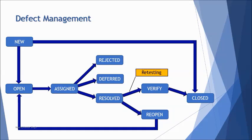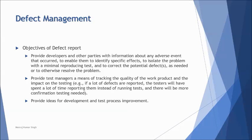The ISTQB section also covers the objectives of writing a defect report — the importance and significance of doing so. There are three major objectives. The first is to provide developers and other stakeholders with information about the issue, so they can understand what defect was encountered, since it only happened with the tester. Writing a defect report communicates this clearly to all stakeholders.